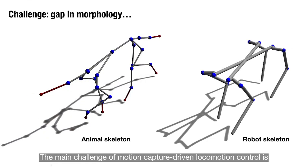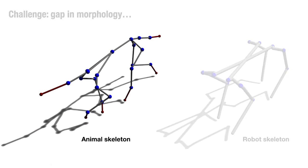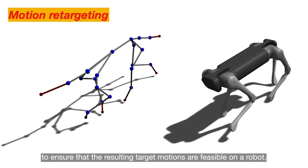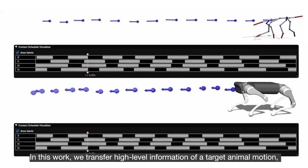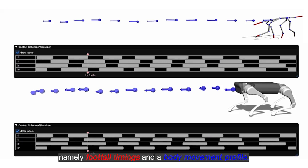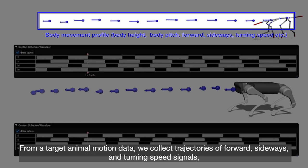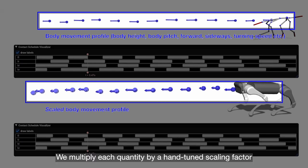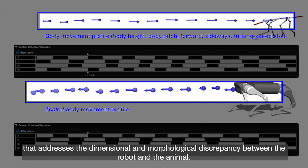The main challenge of motion capture driven locomotion control is to bridge the gap in morphology between animals and robots. It requires a remapping procedure named motion retargeting to ensure that the resulting target motions are feasible on a robot. In this work, we transfer high-level information of a target animal motion, namely footfall timings and a body movement profile. From the target animal motion data, we collect trajectories of forward, sideways, and turning speed signals, as well as parts of body pose we want to reproduce. We multiply each quantity by a hand-tuned scaling factor that addresses the dimensional and morphological discrepancy between the robot and the animal.